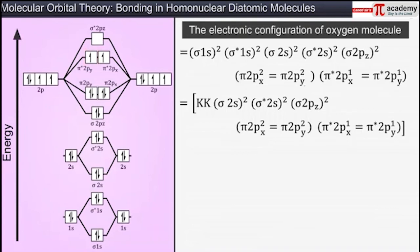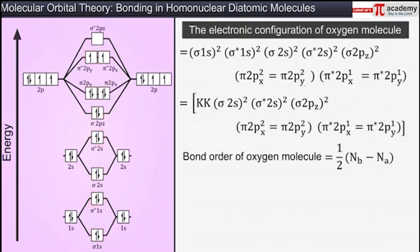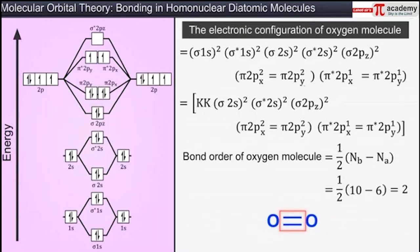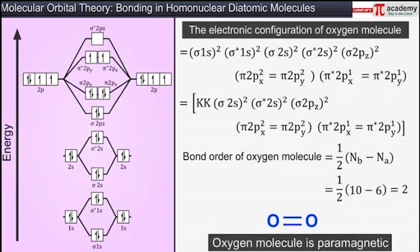The electronic configuration of the oxygen molecule is such that there are 10 electrons in the bonding molecular orbitals and 6 in the anti-bonding molecular orbitals. Thus the bond order of oxygen is calculated as half of (10 minus 6), which equals 2. Hence the oxygen atoms in the oxygen molecule are held by a double bond. It has been proved experimentally that oxygen is paramagnetic in nature, due to the presence of two unpaired electrons in its molecular orbitals.